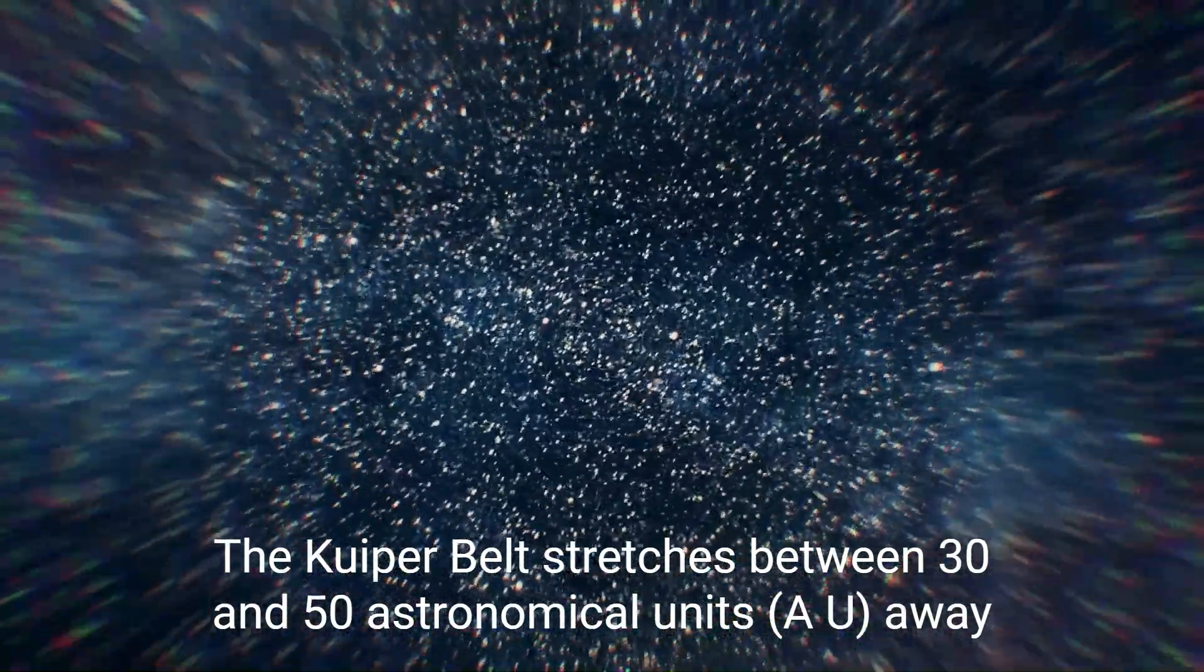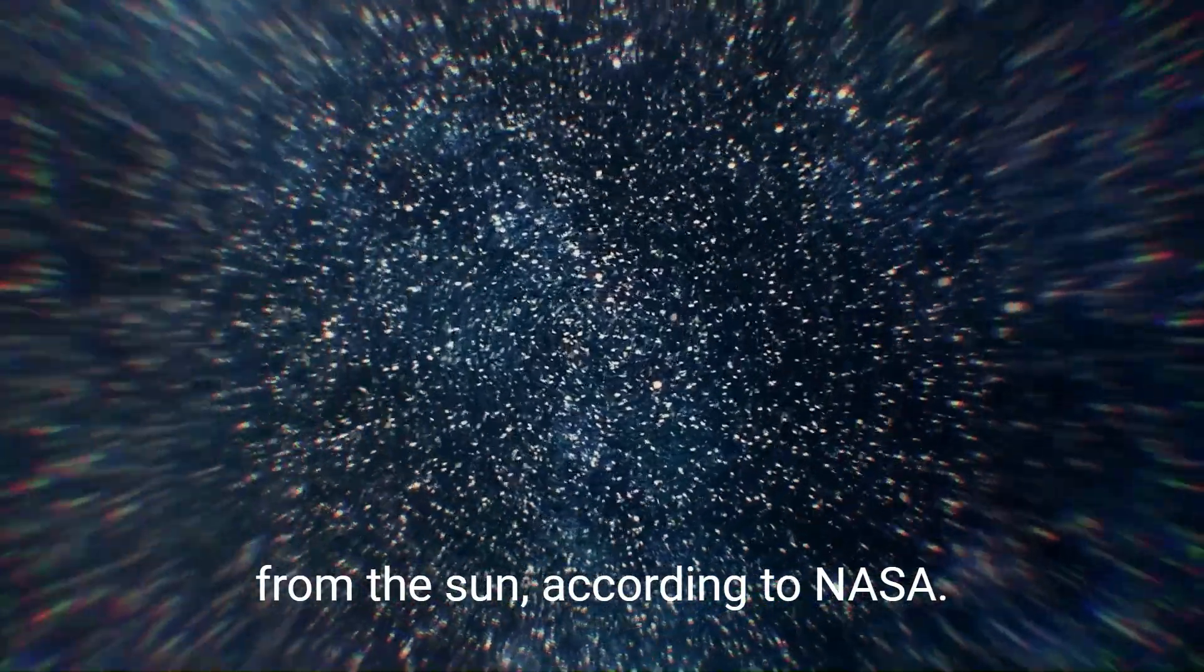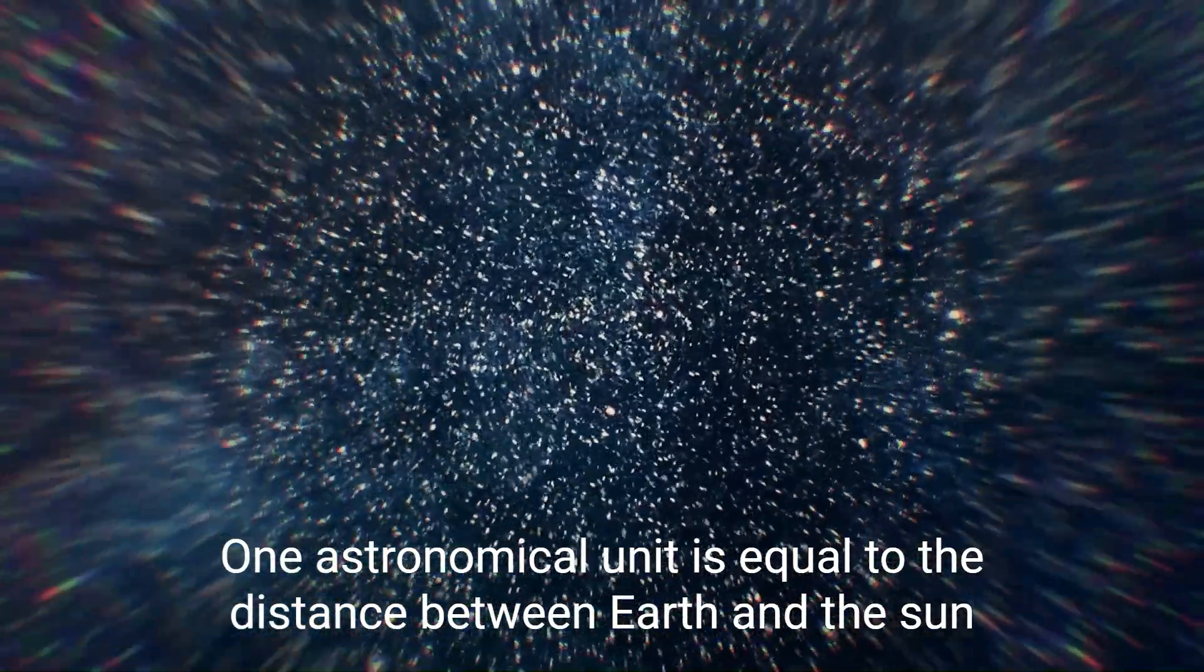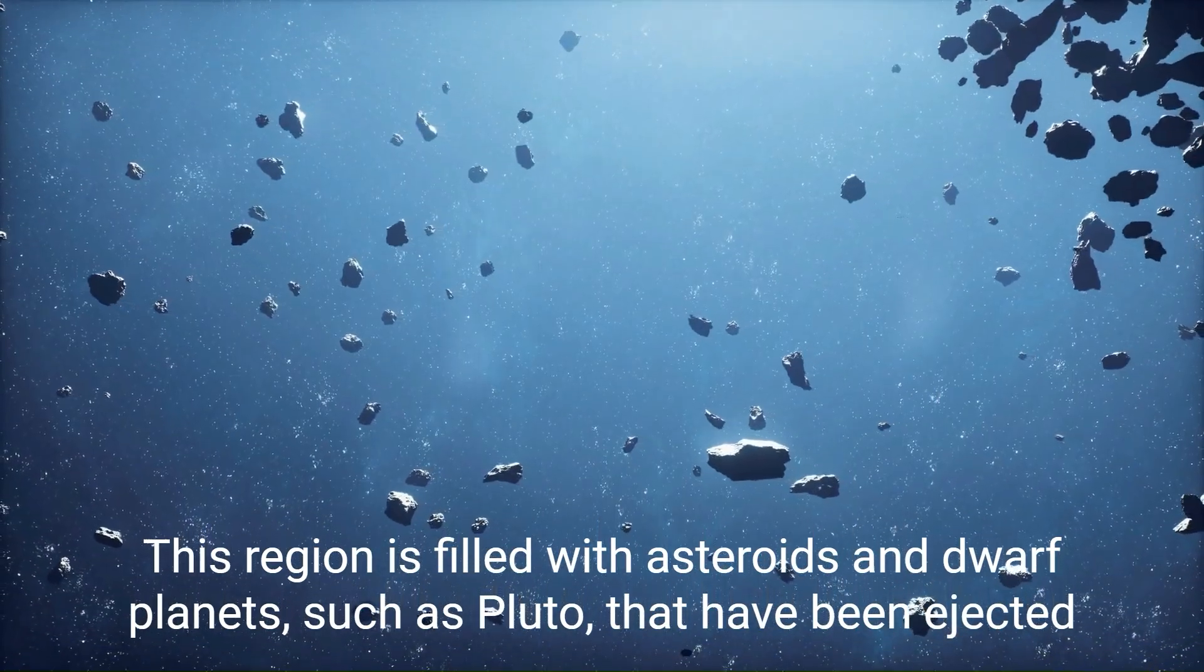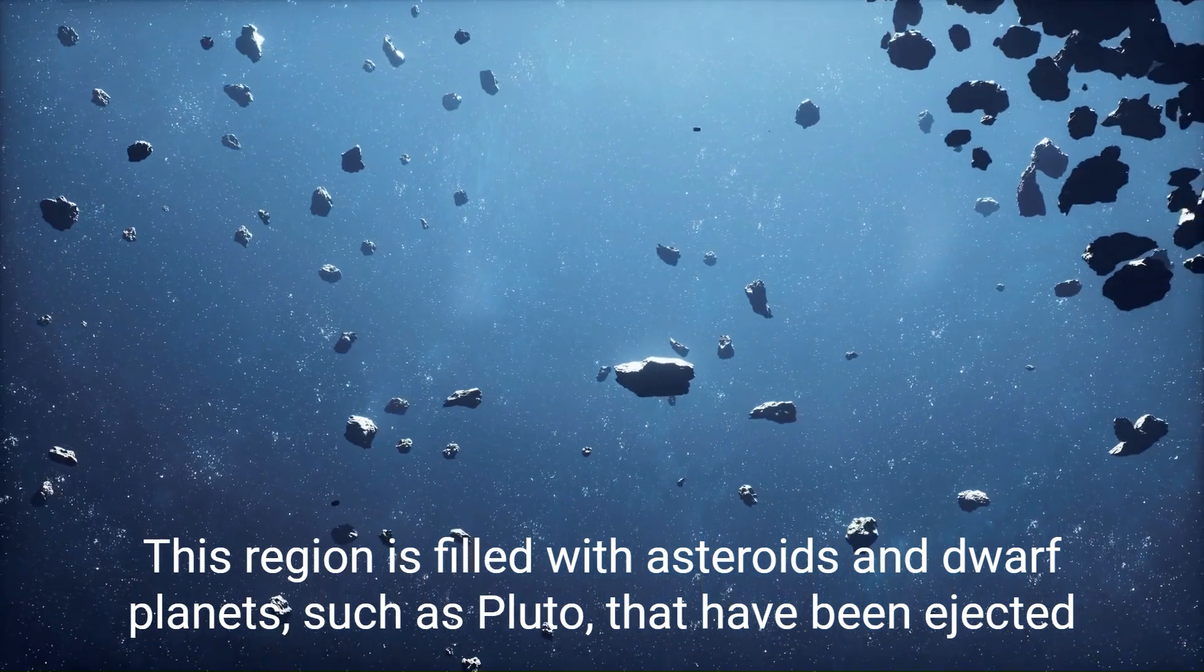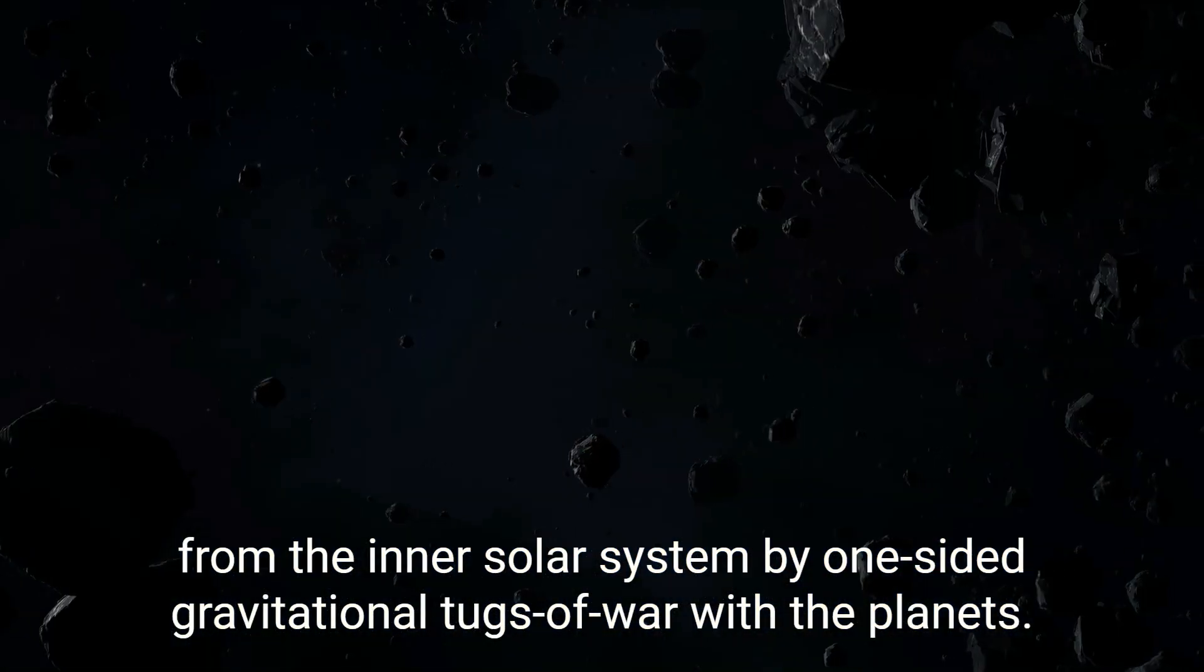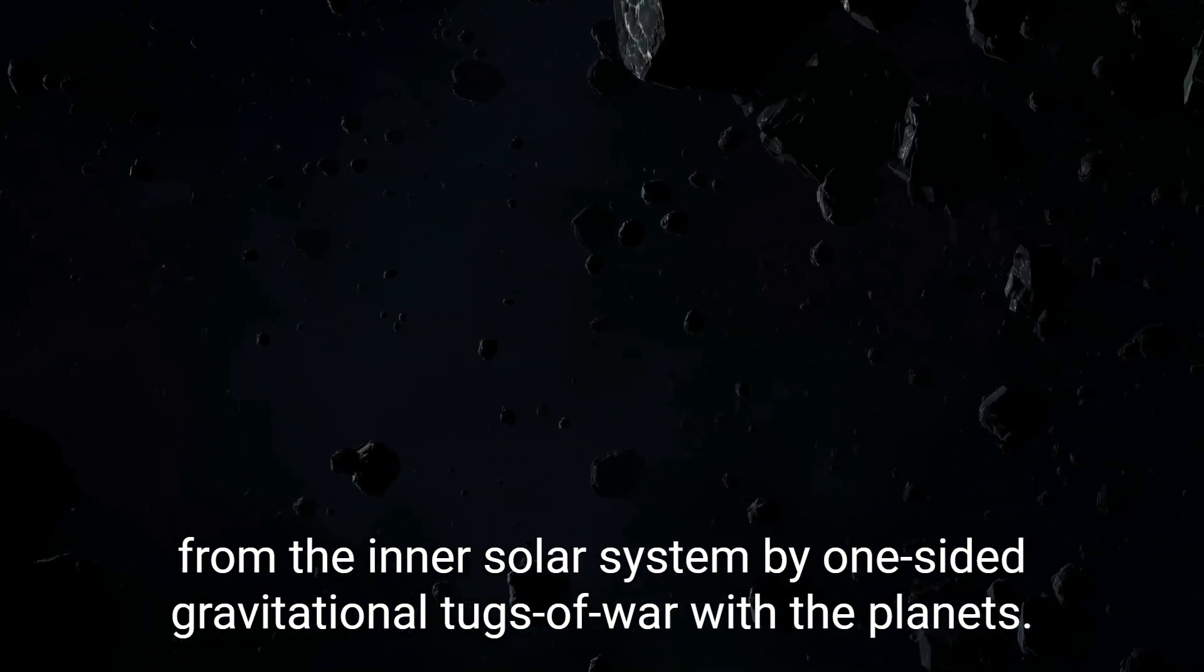Kuiper belt. The Kuiper belt stretches between 30 and 50 astronomical units away from the sun, according to NASA. One astronomical unit is equal to the distance between Earth and the sun. This region is filled with asteroids and dwarf planets, such as Pluto, that have been ejected from the inner solar system by one-sided gravitational tugs of war with the planets.